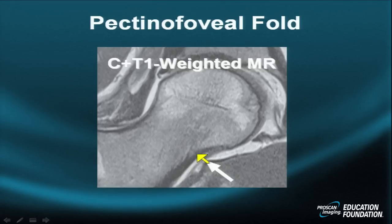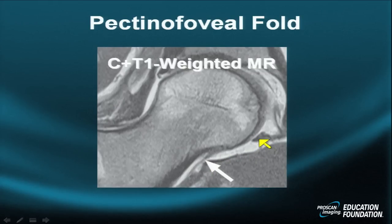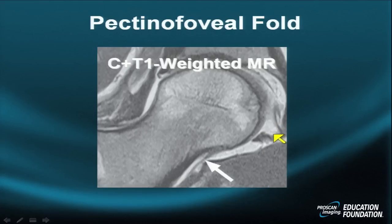The pectinofoveal fold — sometimes called the inferior plica — lies in close proximity to the inferior transverse acetabular ligament. The transverse acetabular ligament is continuous with the inferior labrum and the inferior aspect of the ligamentum teres, which has a ligament-to-ligamentous origin.